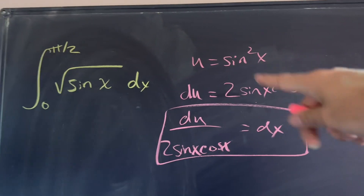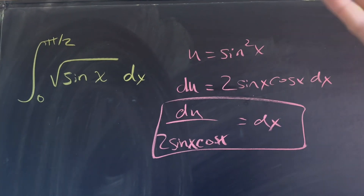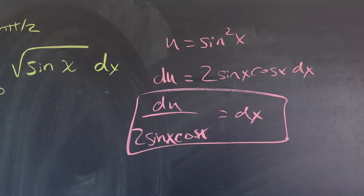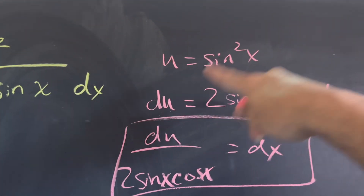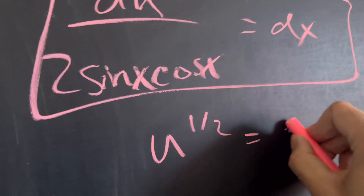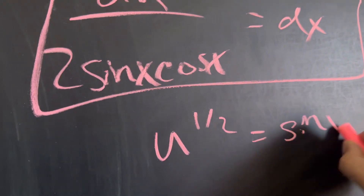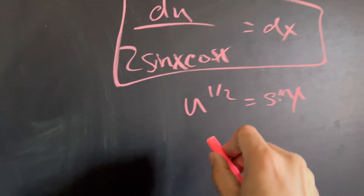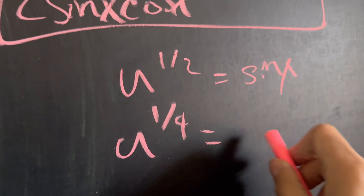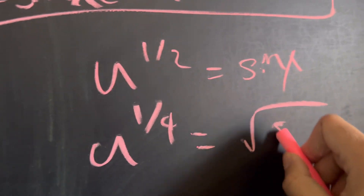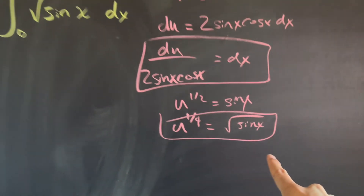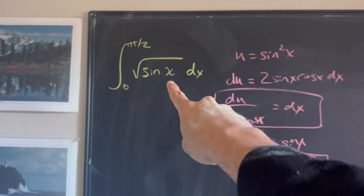Now let's find what the square root of sine x is going to be in terms of u. If we take the square root of u, we get u to the one-half equals sine of x. And if we do it again, u to the one-fourth equals the square root of sine of x — and that's exactly what we want.